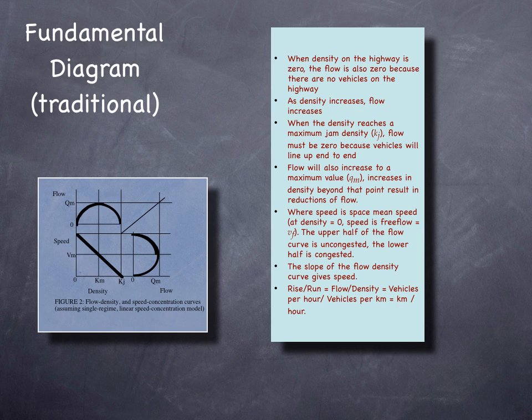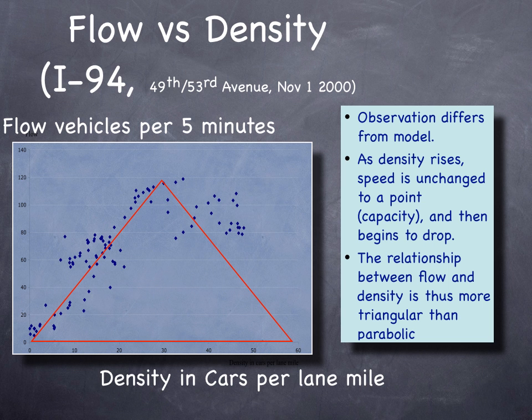As you add vehicles to the roadway, the speed probably does not go up. It might go down. Originally, these were drawn as parabolas. You'll often see that in textbooks. In practice, it's a little bit more like a triangle. This is an example.